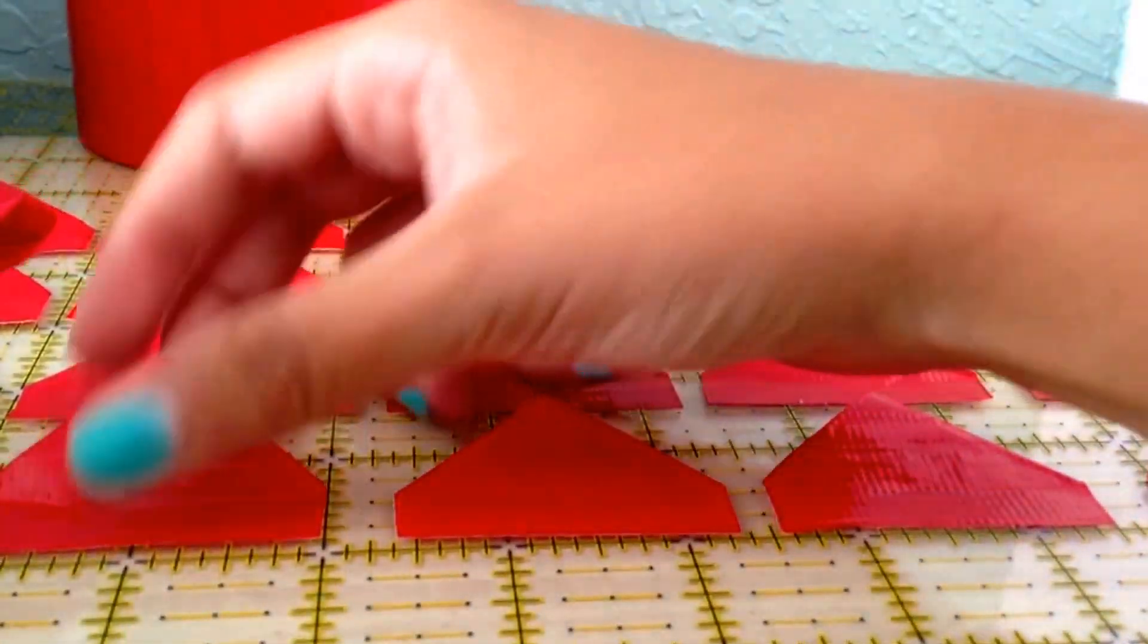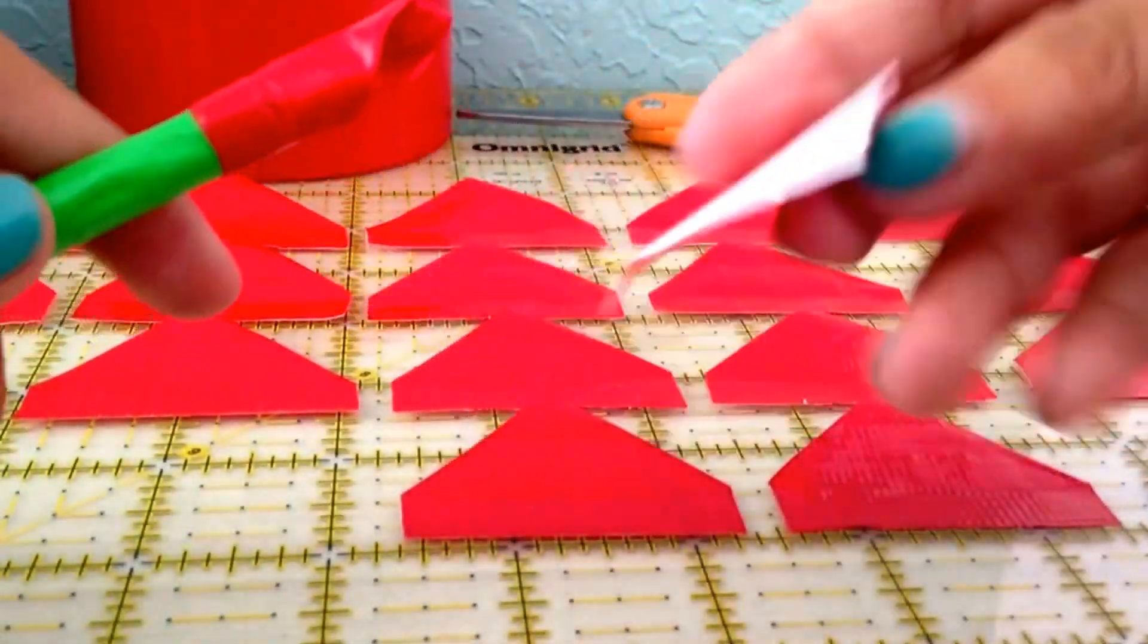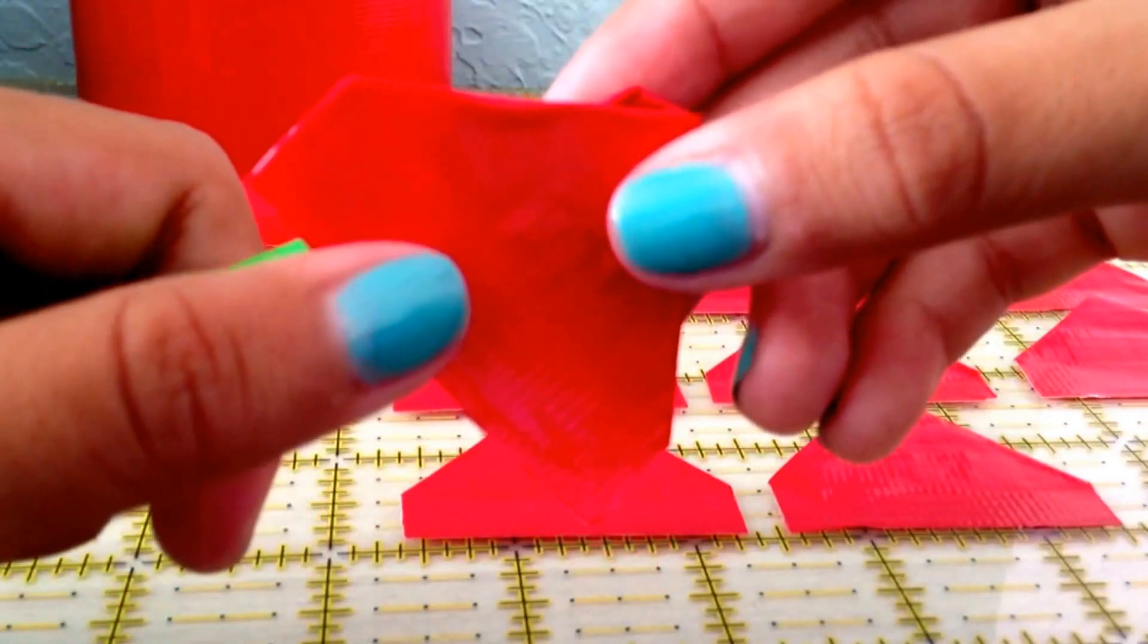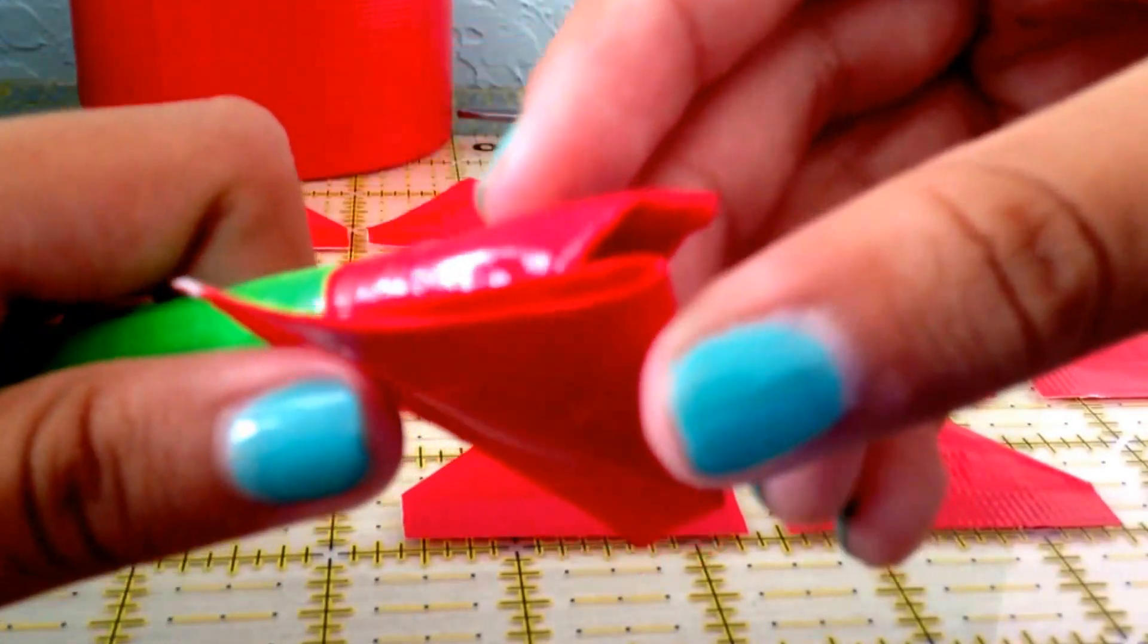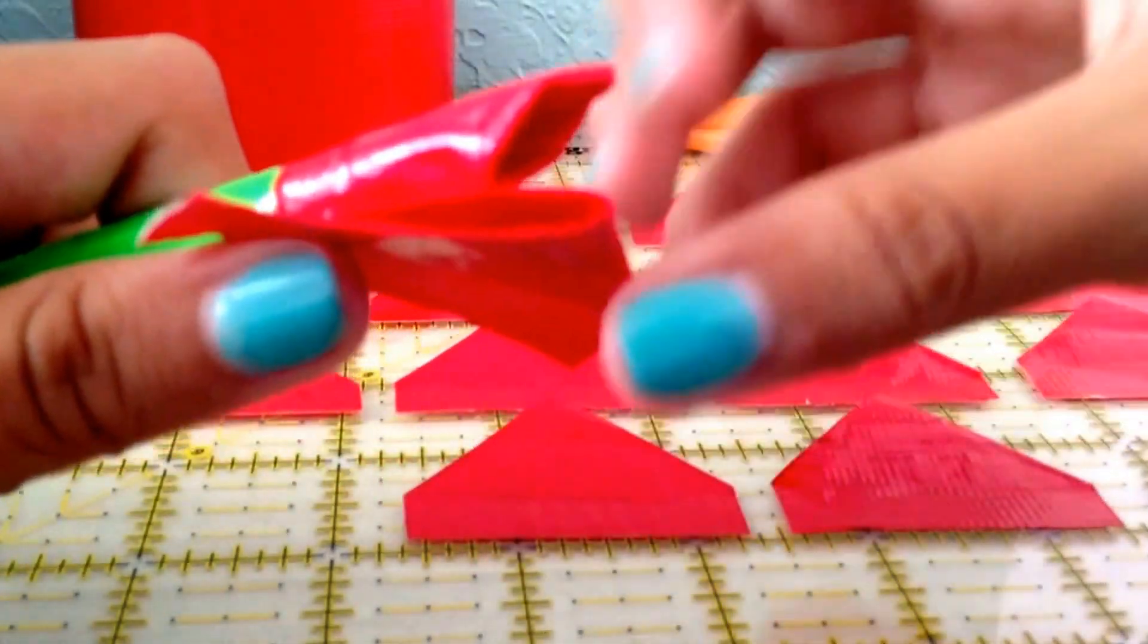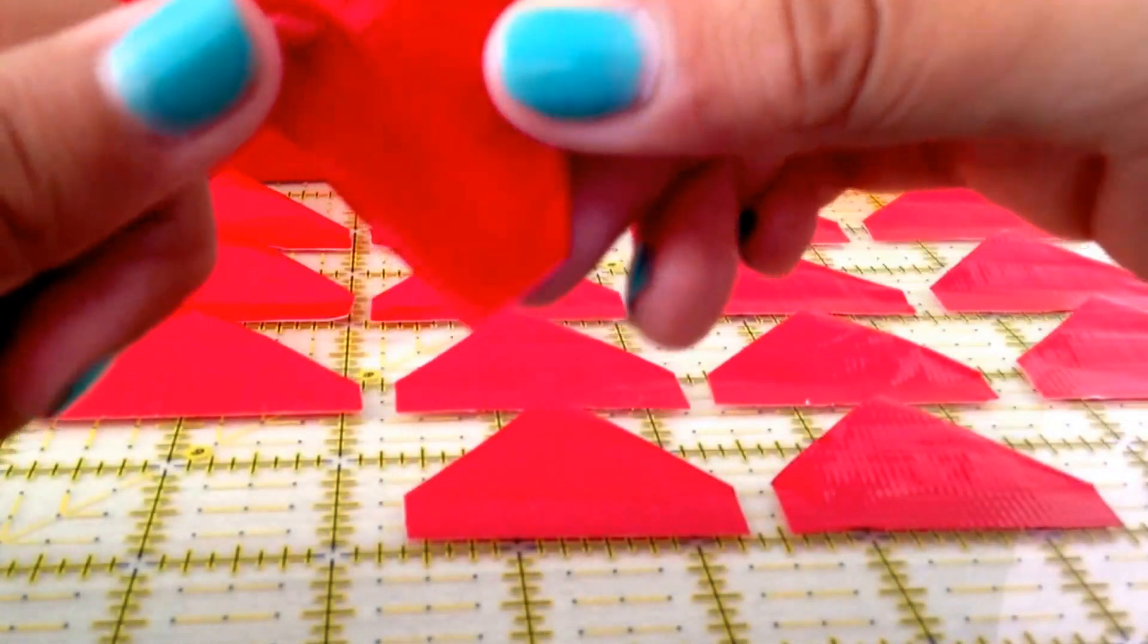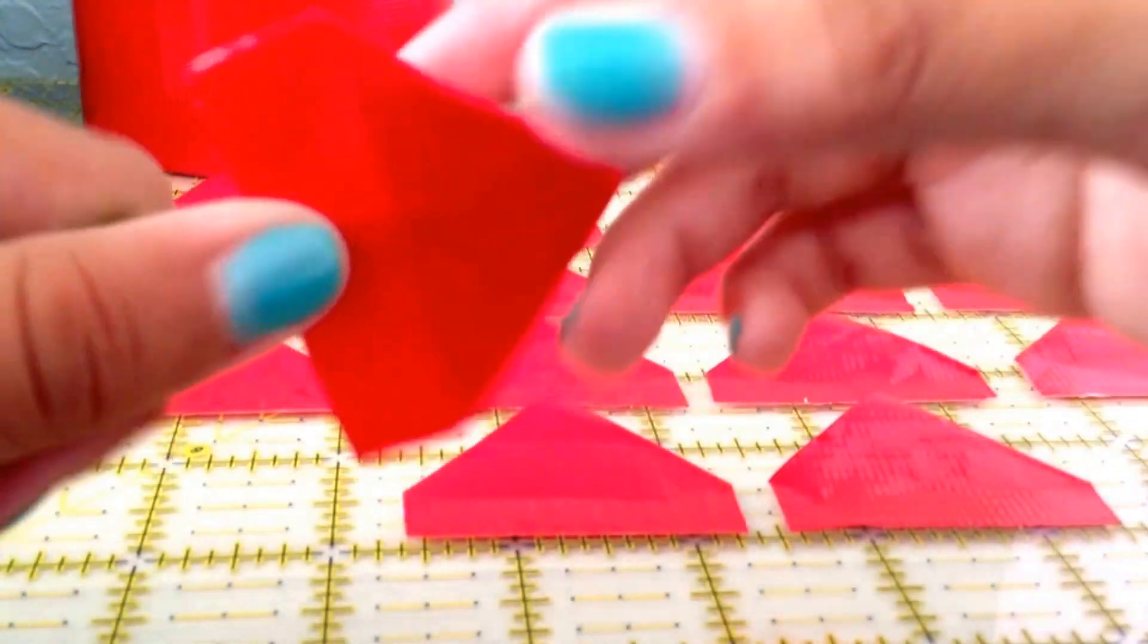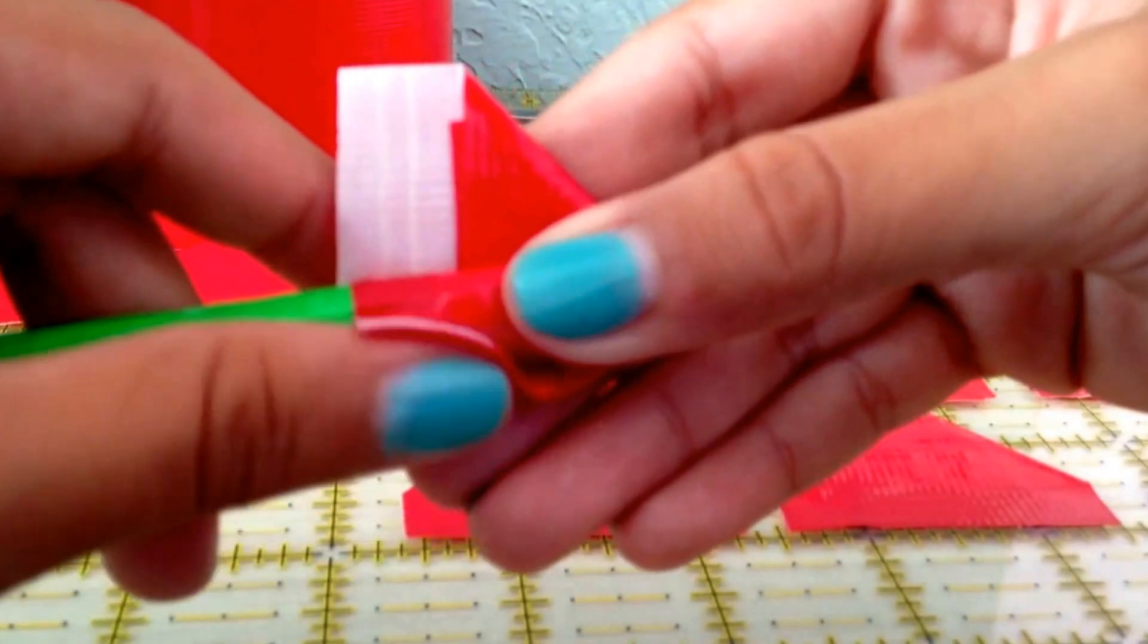Now, take your second strip, your second triangle, and put it on directly in front of the other petal. So, in front, and stick it on and then fold it around.